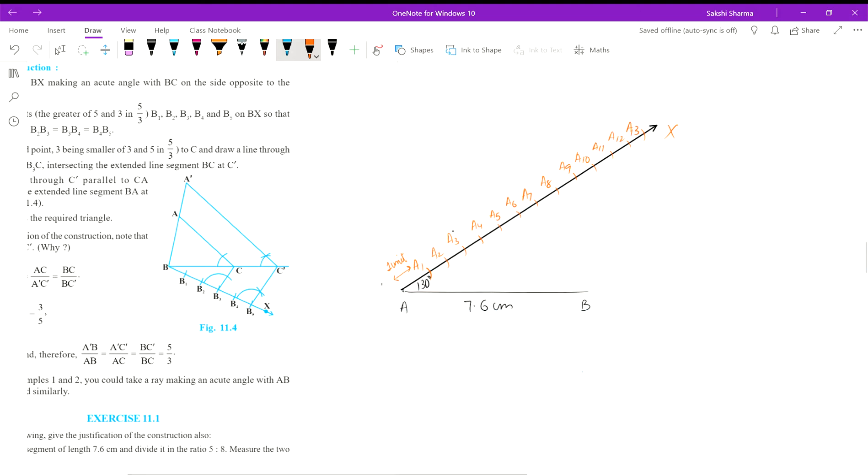After this, we join the last point obtained along this arm with the other endpoint. We get a triangle by doing this. So as you can see, we now have a triangle.